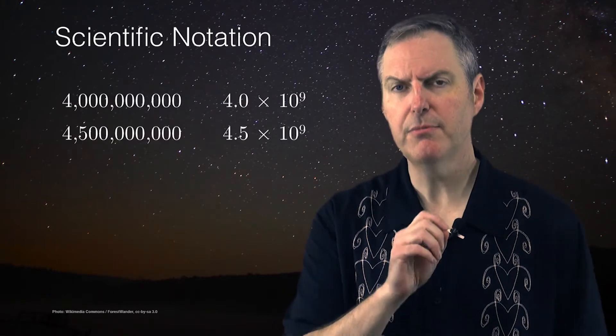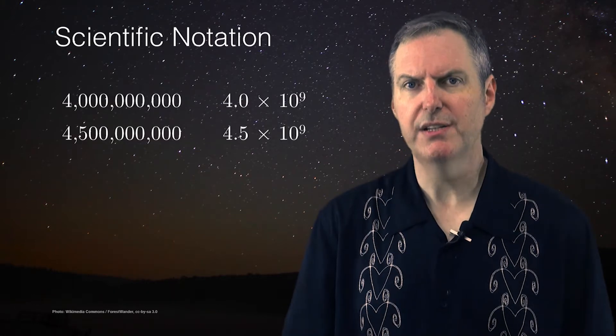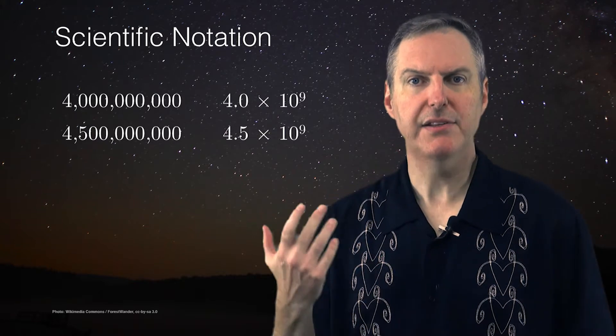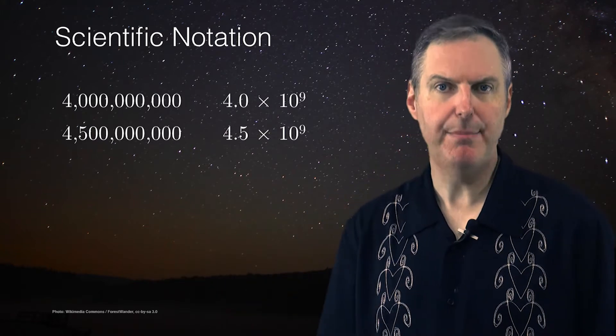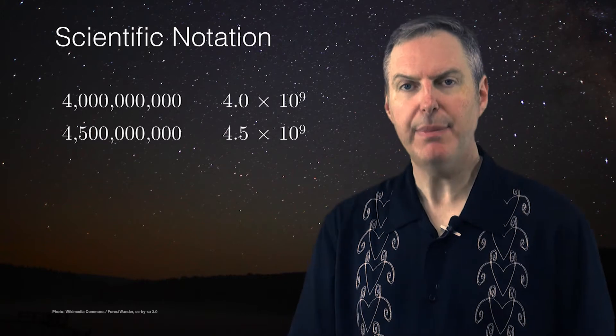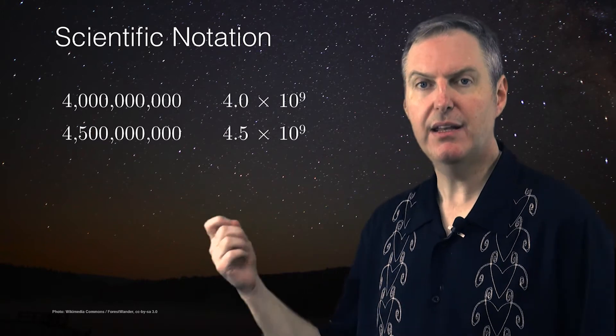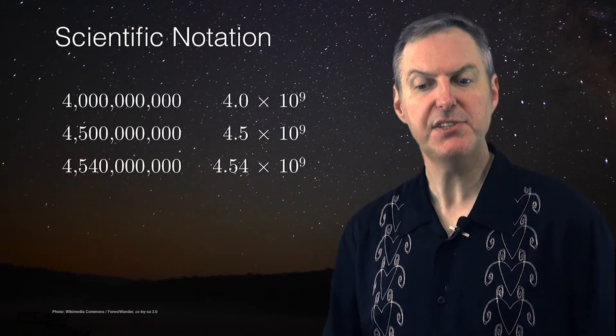But for now, let's just remember our rules of thumb for scientific notation. We can take any number and express it as a multiple of a power of ten. And the thing about this multiple is that we can increase the precision as much as we'd like.